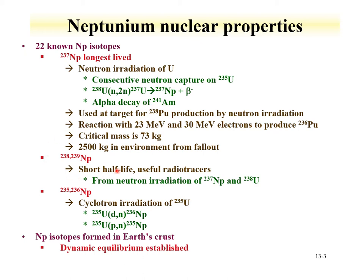Neptunium-238 and neptunium-239 are also available. Neptunium-239 is a relatively short-lived isotope, but it does have a nice gamma line that can be used for radio tracers. Neptunium-235 and neptunium-236 can be produced from cyclotron irradiations of uranium-235.